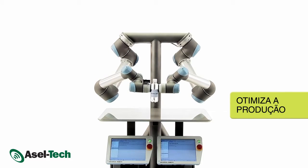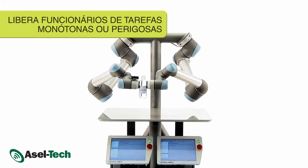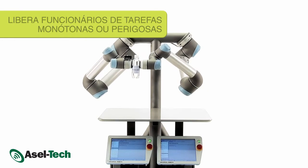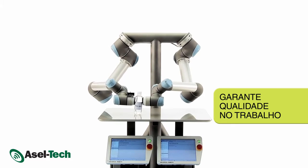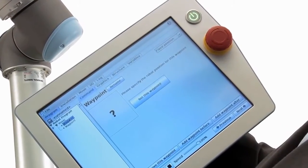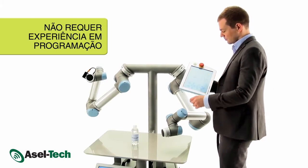Universal Robots optimize production, relieve employees from strenuous or monotonous tasks, and ensure quality control. Setup and programming is a snap. The robot is ready to go to work within an hour.